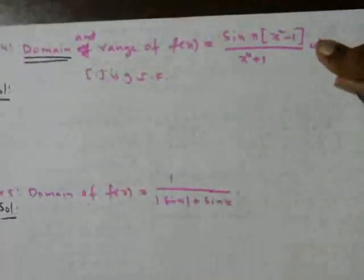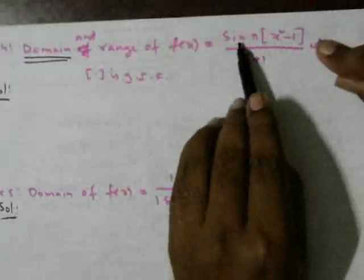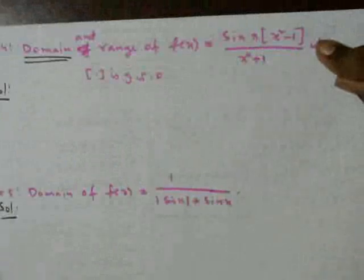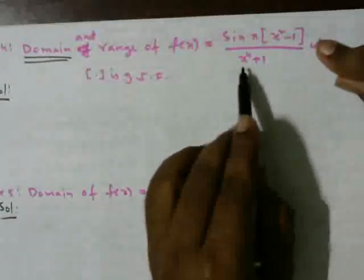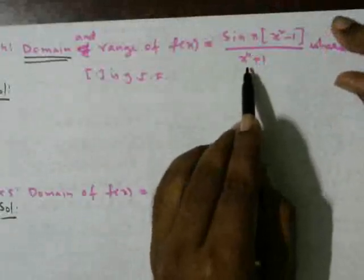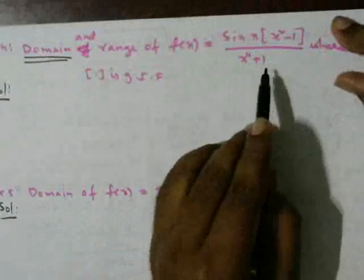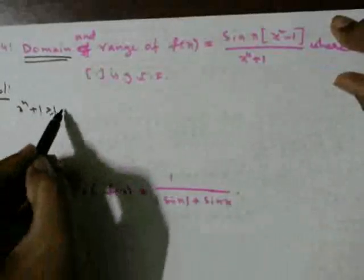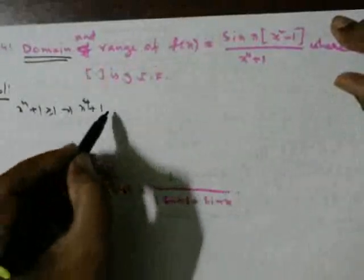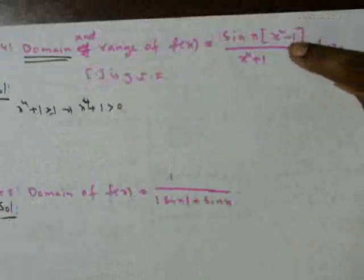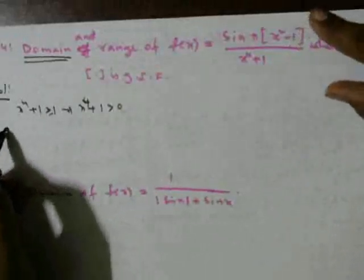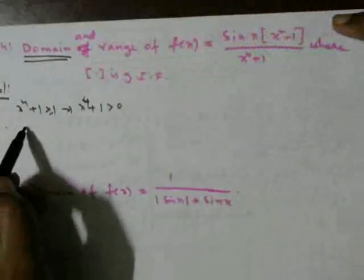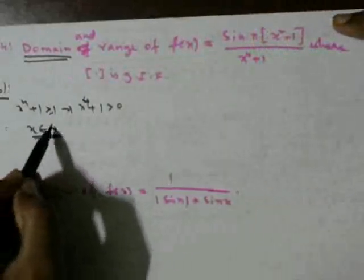Since sin x, greatest integer, and the denominator x⁴ + 1 are all defined for every real number, and x⁴ + 1 is never zero, the function is defined for all real numbers. Therefore, the domain is all real numbers, x ∈ ℝ.